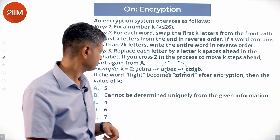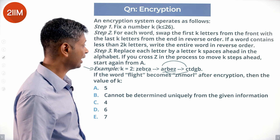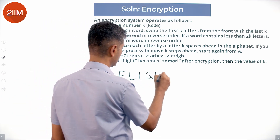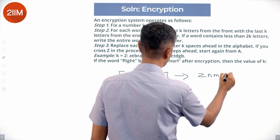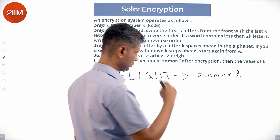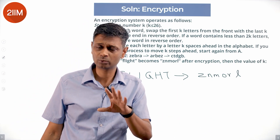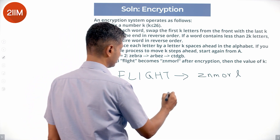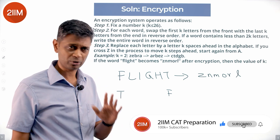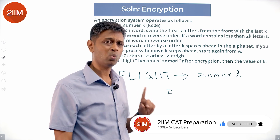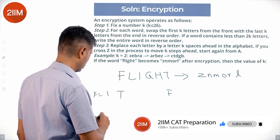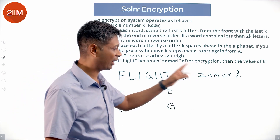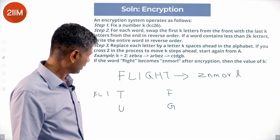Now the problem: if the word FLIGHT becomes Z-N-M-O-R-L after encryption, what is the value of k? We know k is at least 1. Assuming k equals 1: step one maps T to the front and F to the back. Then in step two, T moves one position to become U, and F becomes G. So k is not 1, since that doesn't match.